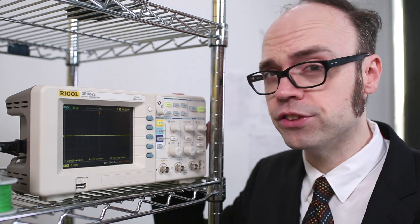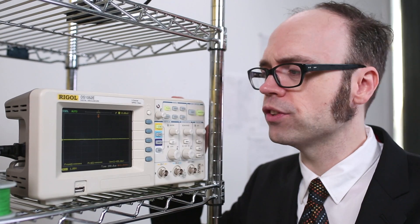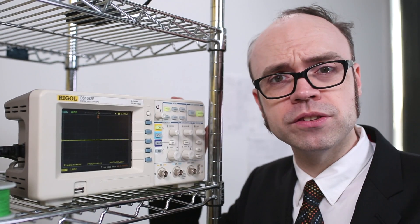An oscilloscope allows us to see how an electrical signal changes over time. This is very useful for troubleshooting a circuit, debugging communications, or even just exploring and learning.